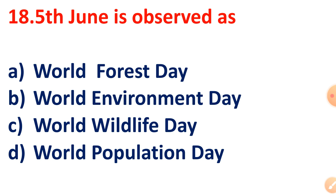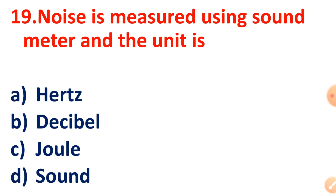Question 18: 5th June is observed as what? The correct answer is World Environment Day — a very important question. Question 19: Noise is measured using a sound meter, and the unit is what? The correct answer is Decibel.